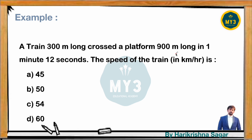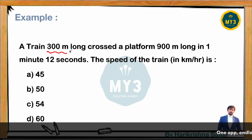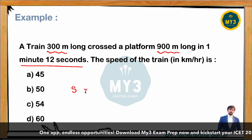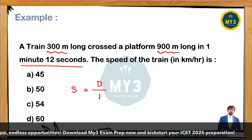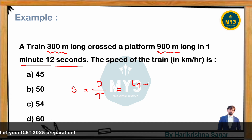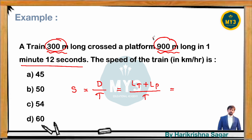Here's a question: a train of 300 meters long crosses a platform of 900 meters long in 1 minute 12 seconds. What is the speed of the train? Speed equals distance divided by time. Since the train crosses a platform — an object with length — total distance = 300 + 900 = 1200 meters.